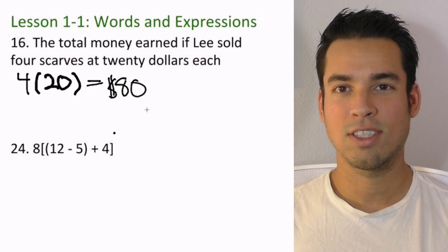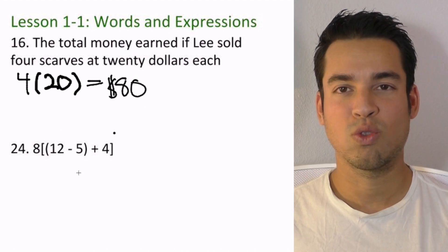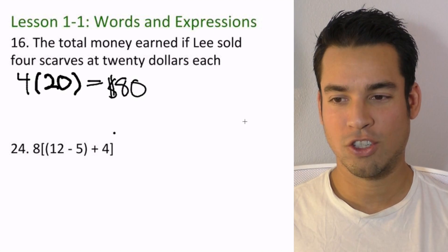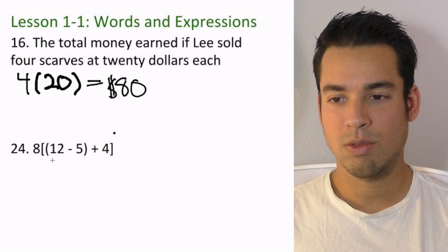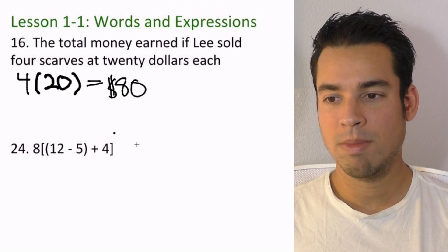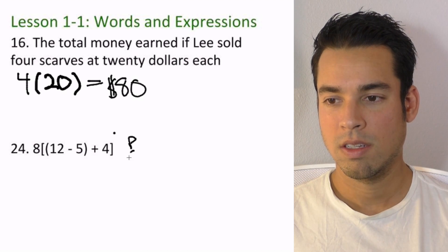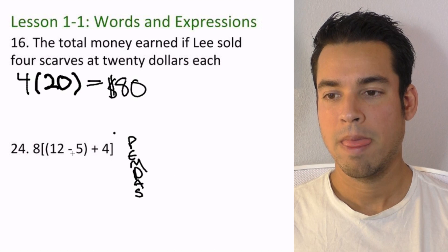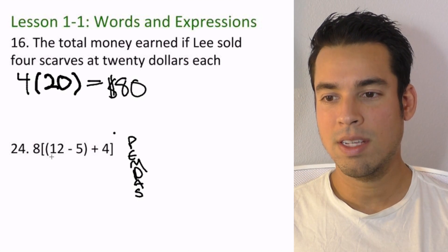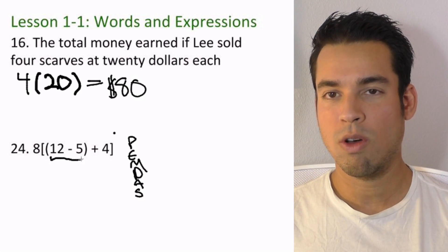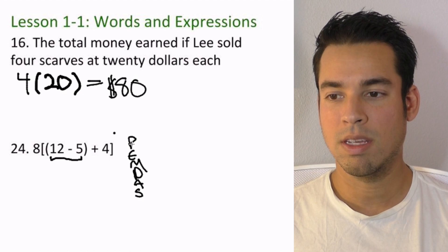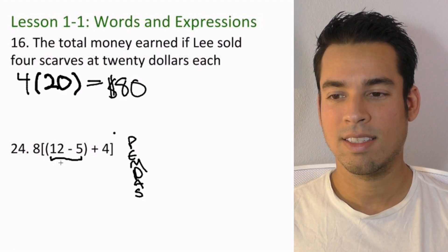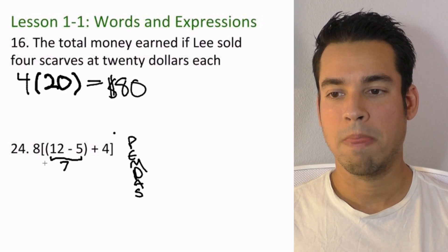Let's move on to number 24. This is an order of operations question. We always have to remember PEMDAS — we work from within the parentheses first. In the very innermost parentheses we have 12 minus 5. This is the P in PEMDAS, and 12 minus 5 gives us 7. So we start there.